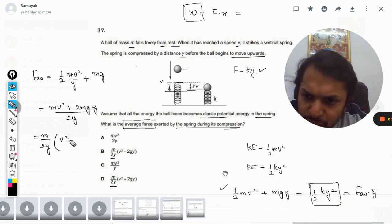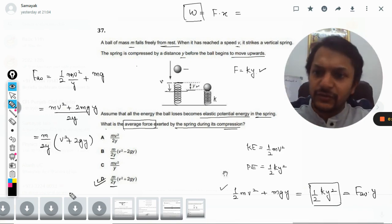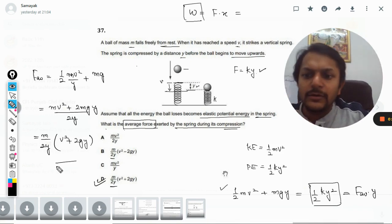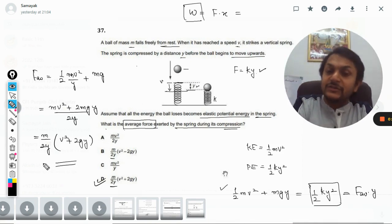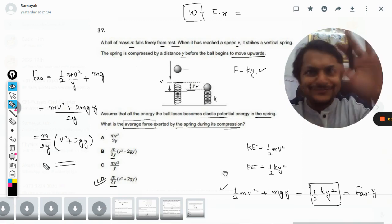So m goes like this, so it will become v squared plus 2gy, and this will be our answer. So this is how we solve this question. Okay dear students, this is Professor Varun. All the best, bye!